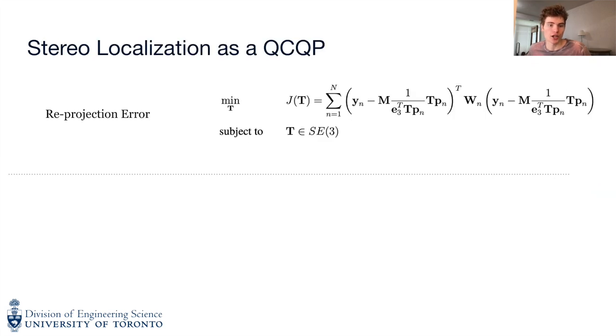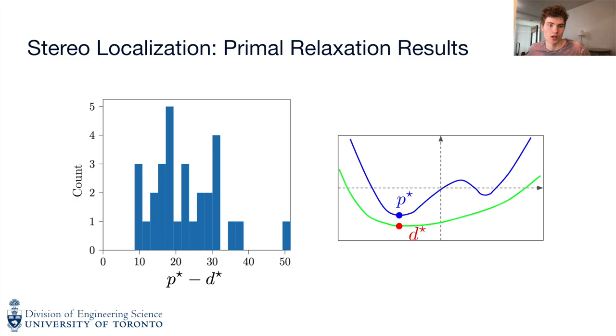While the reprojection error in stereo localization is not quadratic, we can make a substitution to turn it into a QCQP. For a variety of landmark configurations and a fixed pixel space noise, this histogram plots the difference between the global minima and the minima from the primal relaxation. We notice a gap indicating that the primal relaxation is not tight.